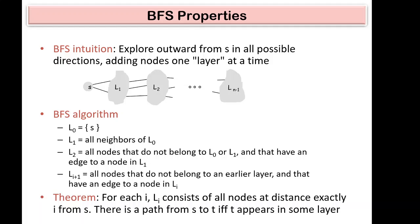We are exploring BFS properties. The intuition of BFS is that in breadth-first search, we explore starting from source s in all possible directions, adding nodes layer by layer, one layer at a time. All the nodes which are one step away from s are at level 1 (L1). The source is assumed to be at level 0, and accordingly we label all remaining levels.